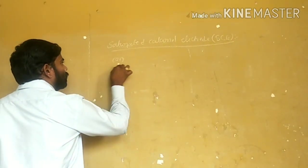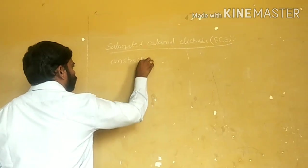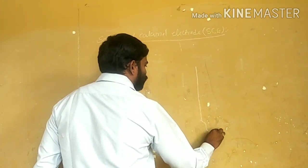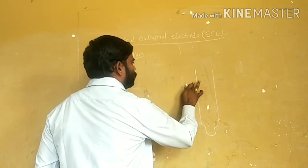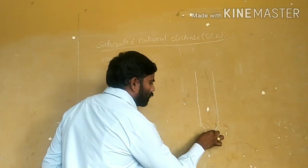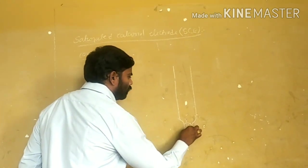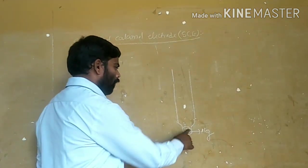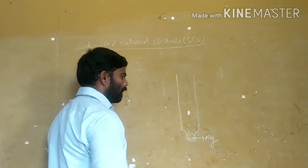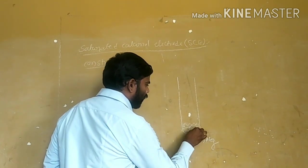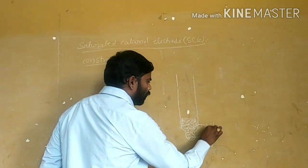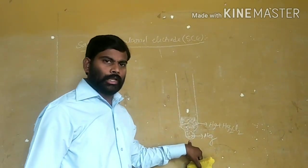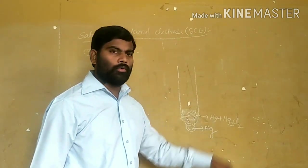Now, the construction of the saturated calomel electrode. We take a glass tube. The bottom of the glass tube is filled with mercury. Above the mercury, we place a paste of mercury-mercurous chloride.